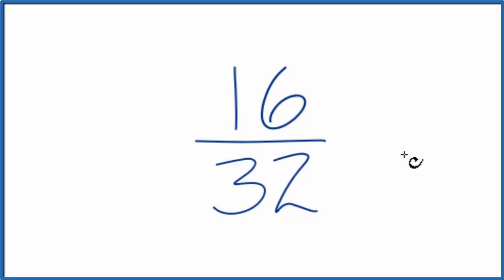So we need to find a common factor between 16 and 32, something that goes into both 16 and 32. If I double 16, I would get 32. So 16 divides into 32.